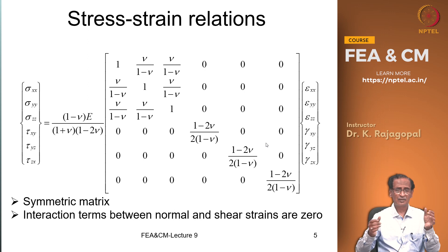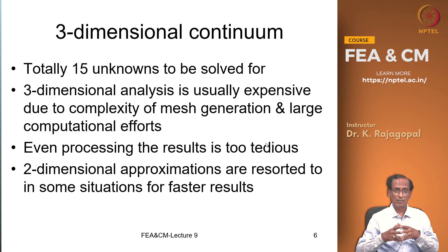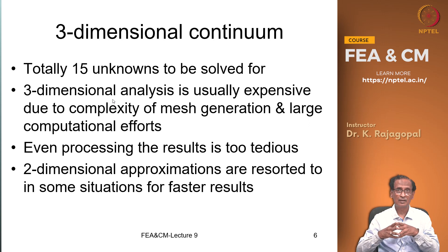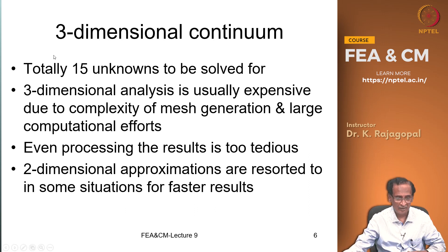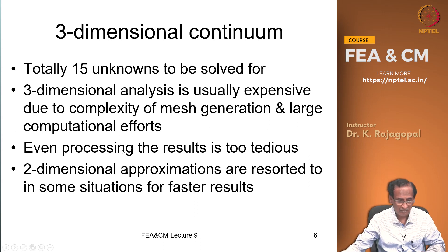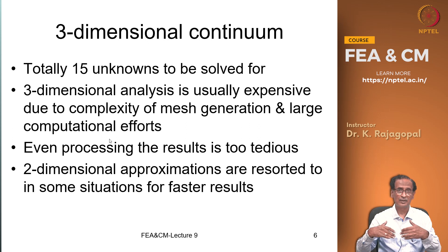In general, our constitutive equation is also more complicated — it is a 6×6 matrix because we have 6 stresses and 6 strains. In three-dimensional problems we have 15 unknowns, and 3D analysis is very cumbersome. Even generating the mesh is very complicated because we have to imagine the third dimension, and it becomes very expensive — not only for mesh generation, but also for computational effort.